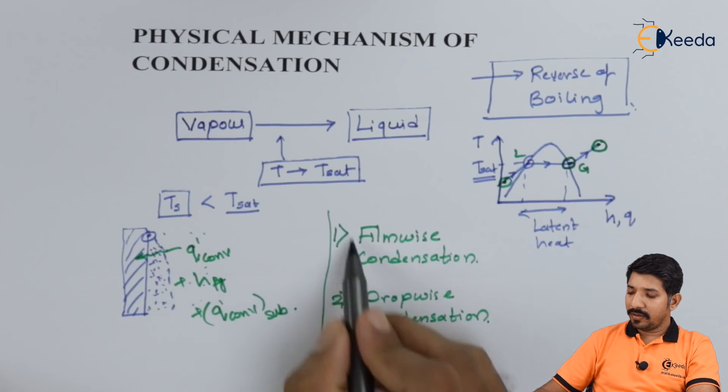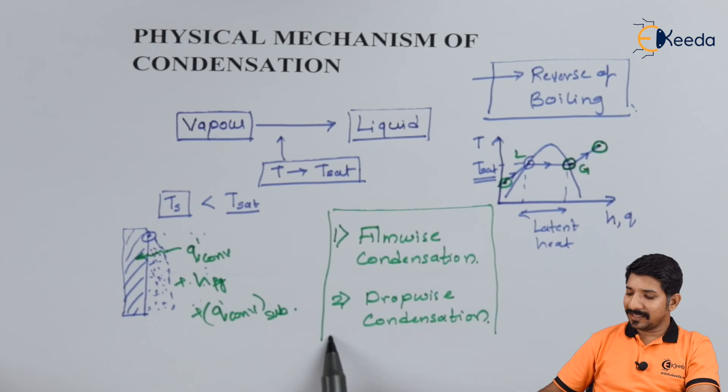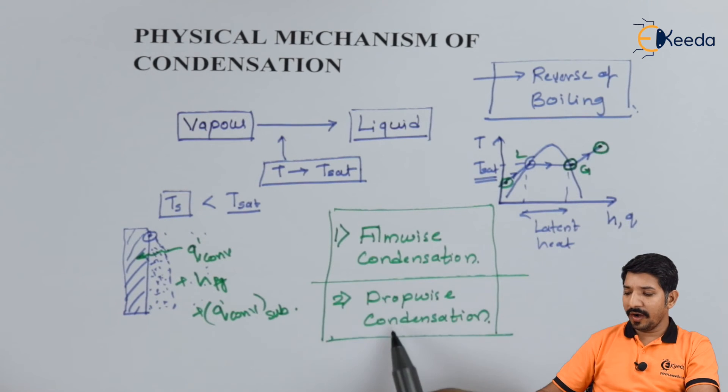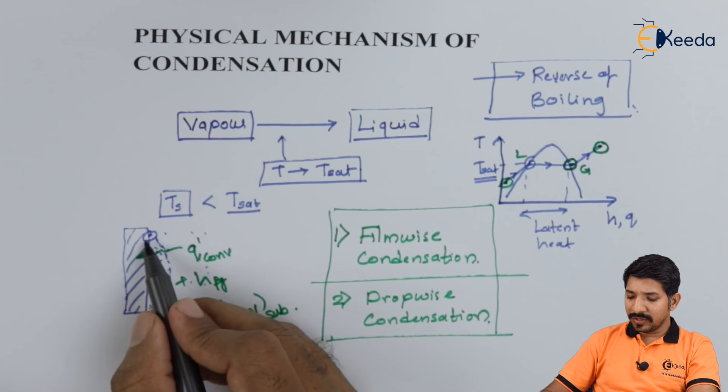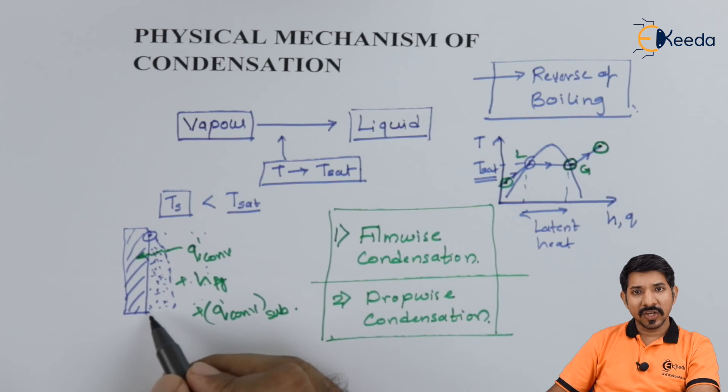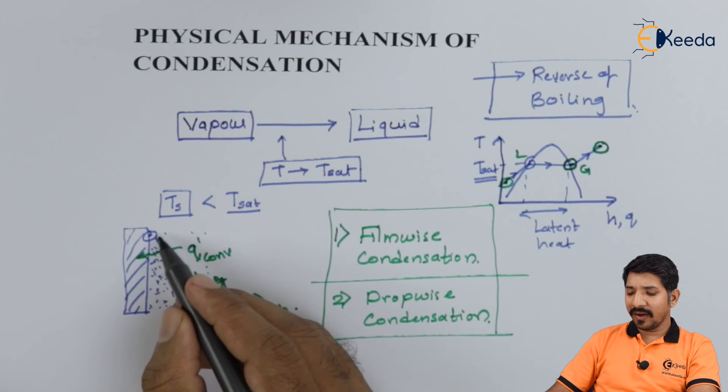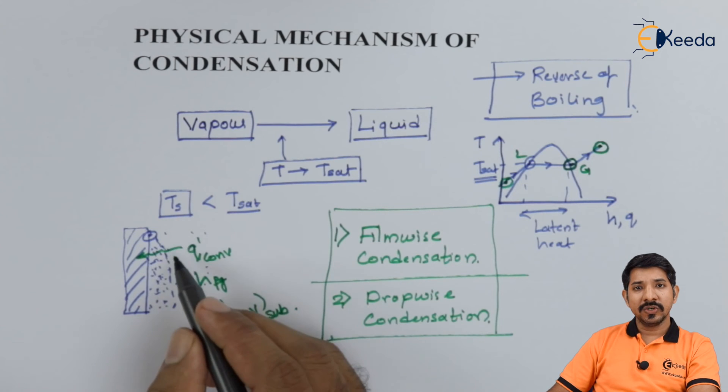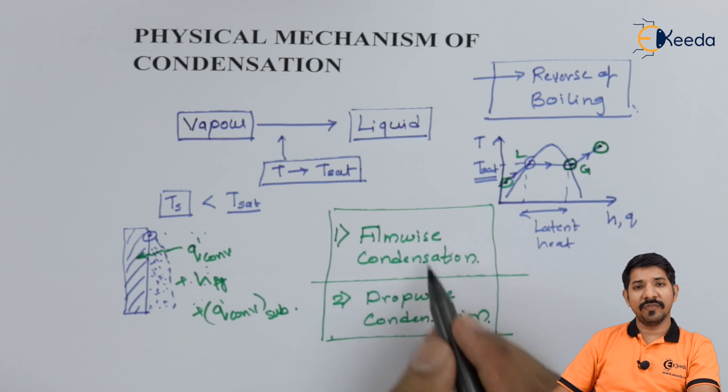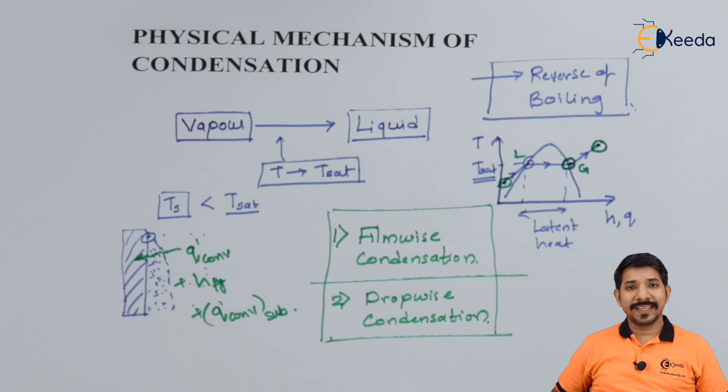Whether the condensation is filmwise or dropwise will depend entirely on the property of the surface, or nowadays they can alter the property of fluid to have either kind of condensation. In this topic, we talked about the basic mechanism of condensation and the types of condensation.